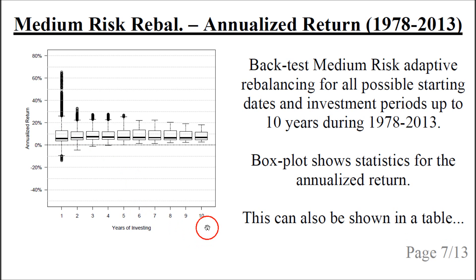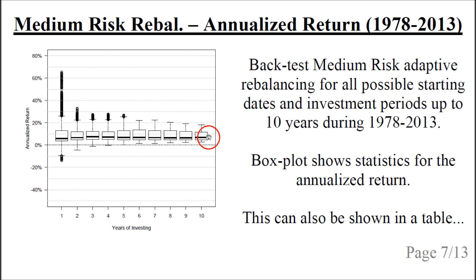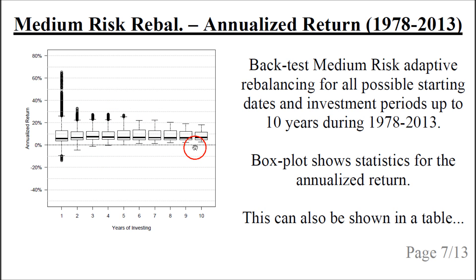For a 10-year investment period, there were no losses. The worst annualized return was about 2% and the best was maybe 18%, with a median of around 5–6%. The distributions become narrower as we invest for more years, and the probability of loss becomes a lot lower. After 5 or 6 years, there were no losses.